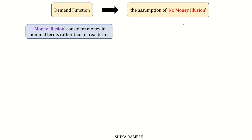Money illusion is a subjective aspect that considers money in nominal terms rather than in real terms and ignores the effects of inflation. When nominal income increases during inflation, consumers mistakenly believe that their purchasing power has increased, when in fact it has declined due to the rise in prices.